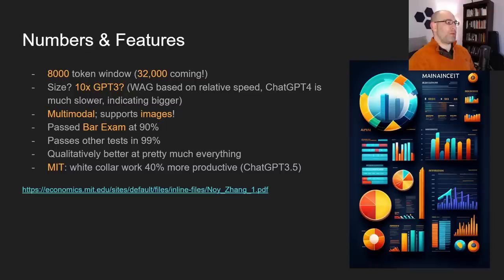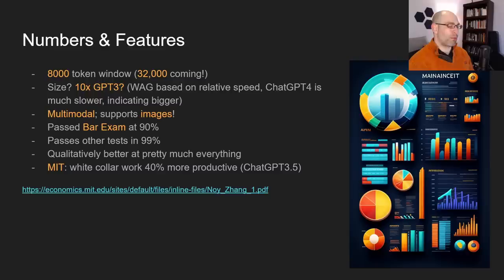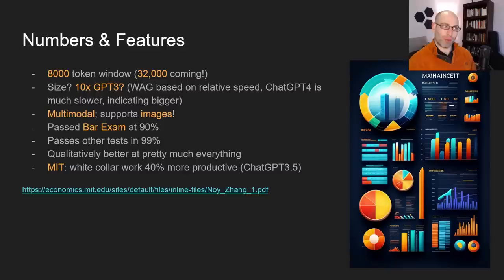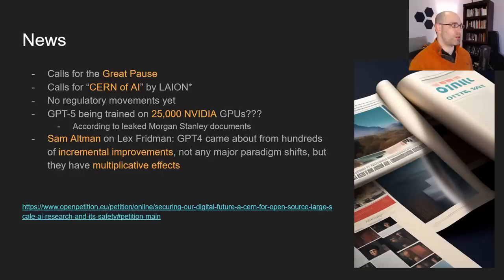One other thing about GPT-4 that most of us haven't seen yet, but they did demonstrate: it is multimodal — it's not just text anymore, it supports images. GPT-4 passed the bar exam in the 90th percentile and some other tests in the 99th percentile, so it's pretty smart. On some benchmarks it outperforms most humans. It is qualitatively better at pretty much everything above GPT-3. MIT released a study showing that even GPT-3.5 increased white-collar productivity by 40 percent, and GPT-4 is going to do the same. People are just beginning to learn how to use these models.